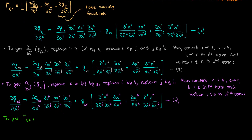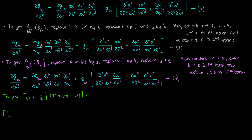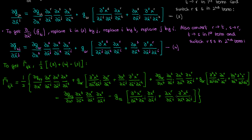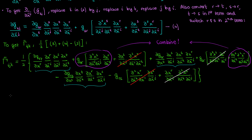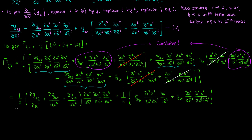To get the transformed Christoffel symbol of the first kind, I add equations 3 and 4, subtract equation 2, and take half of everything. This gives a pretty cumbersome expression at first, but I can simplify things by cancelling out the mixed partial derivative terms. This cancellation assumes that the coordinate transformation is composed of continuous and differentiable equations; otherwise you wouldn't be able to switch the order of the mixed partial derivatives, which is what we exploit here. Next, I take the three partial derivative products common from each expression involving the partial of the metric tensor component with respect to a coordinate, since they show up with each of these metric tensor partial derivatives.